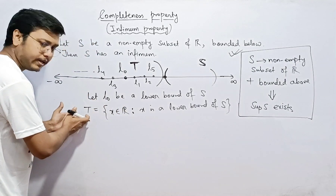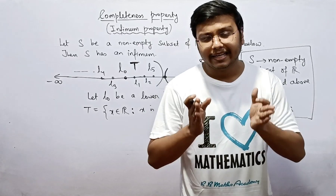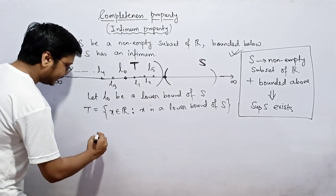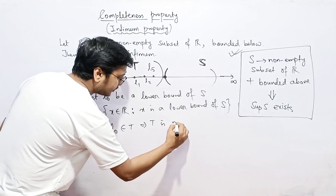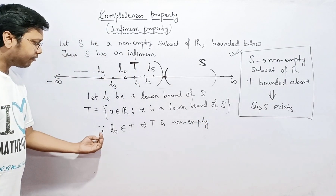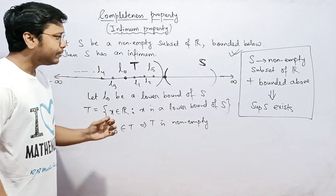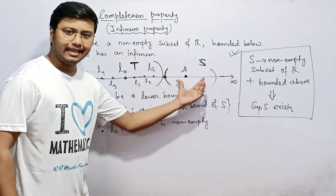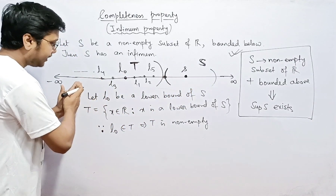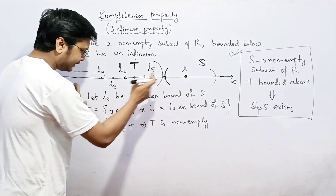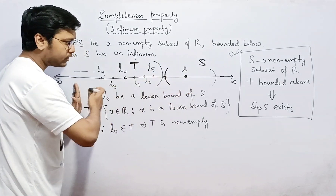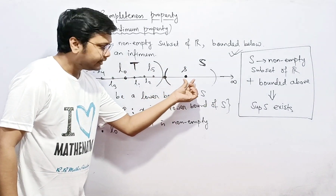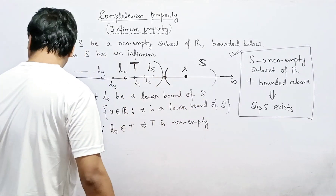Whenever you construct a set you need to show it is non-empty. Since L0 belongs to T, this implies T is non-empty. Now let me take a random element small s from capital S. From the diagram, any element of S is greater than all the elements of T, because all elements of T are on the left-hand side and s is on the right-hand side.